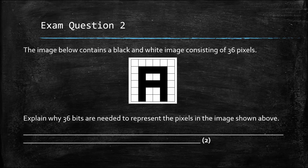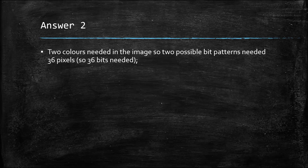Exam question two: the image below contains a black and white image consisting of 36 pixels. Explain why 36 bits are needed to represent the pixels in the image. The image is black and white, so it's monochrome — two colors. To represent two colors we need one bit, as the first power of two is 2, requiring one bit. There are 36 pixels, each needing one bit, so 36 bits are required in total.